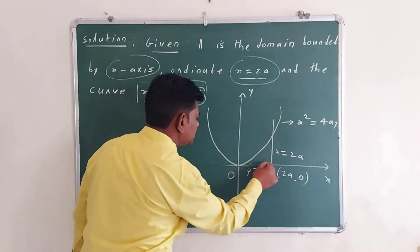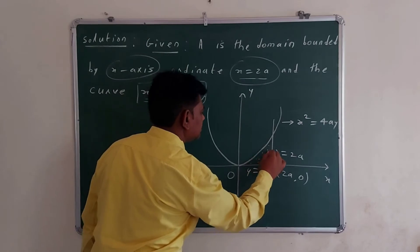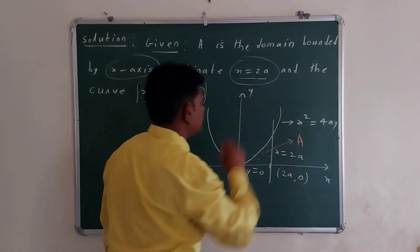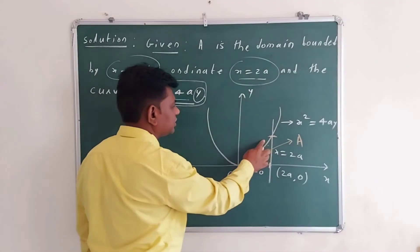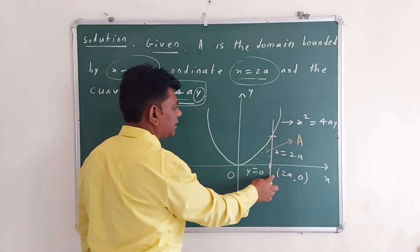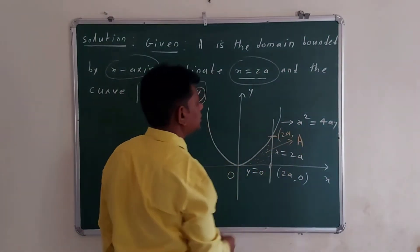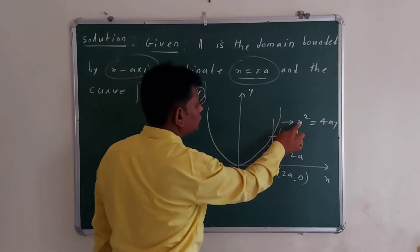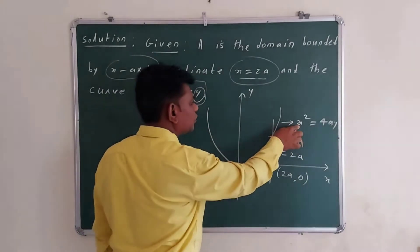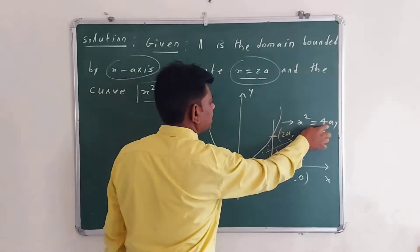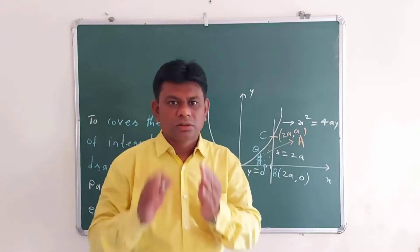So this is the region of integration — this is region A. This is the point of intersection between the parabola and the line, where X = 2A. Therefore, Y = (2A)² / 4A = 4A² / 4A = A.